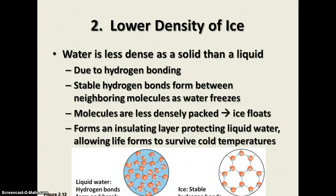Another thing that's important about water for living things is the density of ice. You know that ice floats in water solutions, and this is also because of hydrogen bonding. When water is in the liquid state, there are hydrogen bonds that exist between the water molecules, but they're constantly forming and breaking because the molecules are moving around quite a bit — they move away a little bit, break the hydrogen bond, then get closer to another water molecule and form a new one.